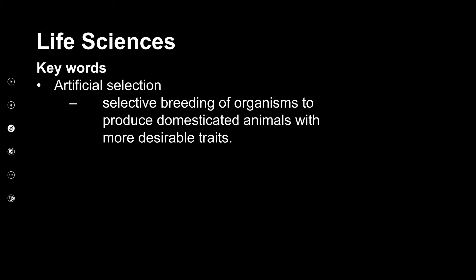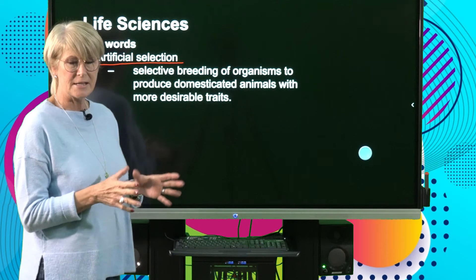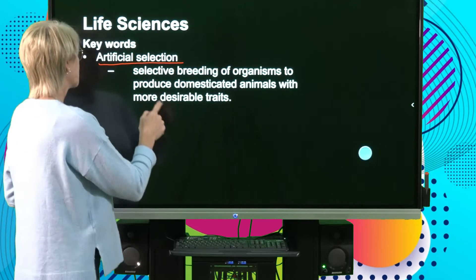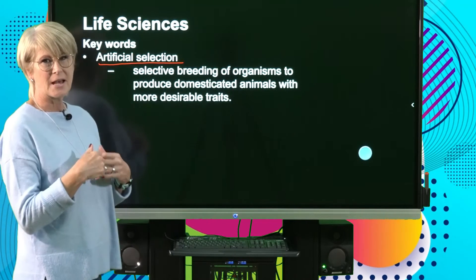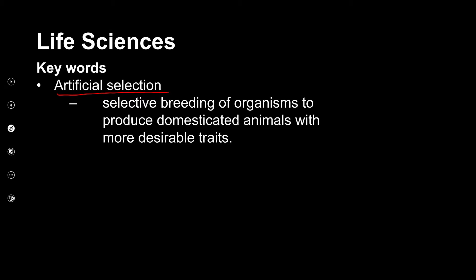Let's have a look at some of the key words. The first one is artificial selection. Artificial means that we artificially select something — in other words, it's not happening naturally. This is where humans selectively breed organisms to produce domesticated animals and even plants with more desirable traits.